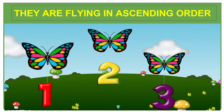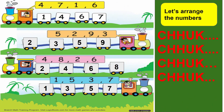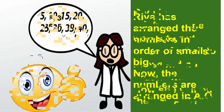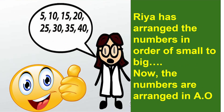They are flying in ascending order: 1, 2, 3. There are a few activities. Rhea is confused — she wants to put these numbers in ascending order. Now Rhea has arranged the numbers in order of small to big.